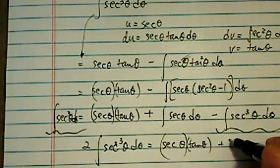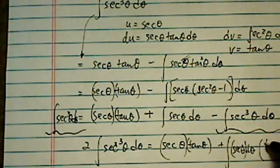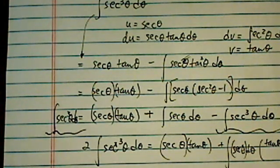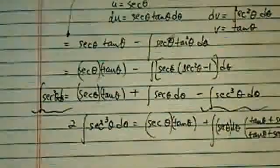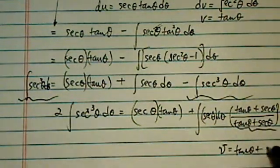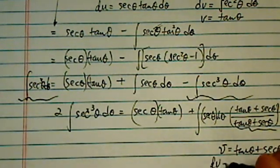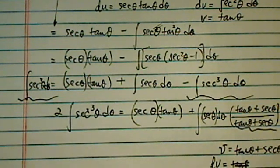And then plus secant theta d theta. I'm going to do some trick over here. I'm going to multiply by tangent theta plus secant theta. Now I don't know who actually thought of this clever trick here. For sure I didn't do that. The reason we do that is if we have v is equal to tangent theta plus secant theta, and lo and behold, our dv is equal to tangent theta on top, actually this is secant theta, tangent theta plus secant theta squared plus tangent theta times secant theta.